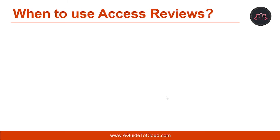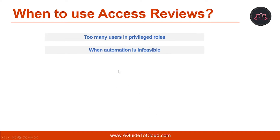Let me help you understand when to use access reviews. If you have too many users in privileged roles, it's a good idea to check how many users have administrative access, how many of them are global administrators, and if there are any invited guests or partners that have not been removed after being assigned to an administrative task. Another scenario is when automation is infeasible. You can create rules for dynamic membership on security groups or Office 365 groups, but what if the HR data is not in Azure AD, or if users still need access after leaving the group to train their replacement?